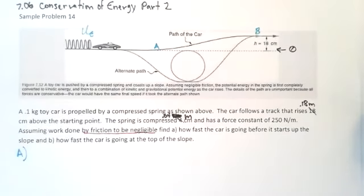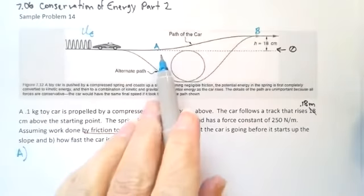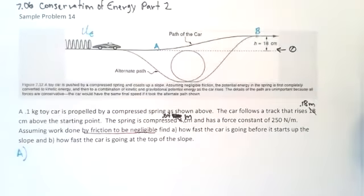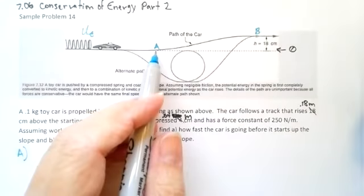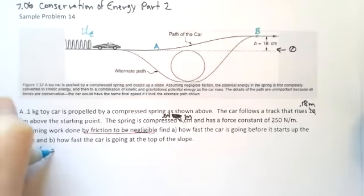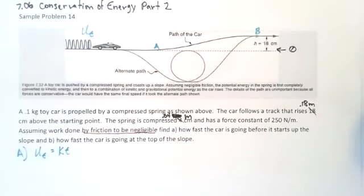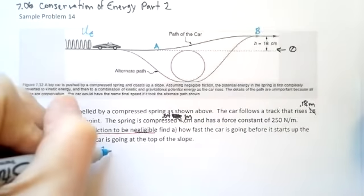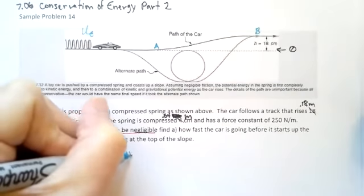So let's start with part A. How fast is the car going before it starts up the slope? Well, if I can ignore friction, all of my elastic potential energy over here at the spring is going to get converted to kinetic energy as I go. So I have not increased my elevation and I haven't lost anything to friction. So I could say after my energy analysis for part A, that UE is going to equal KE.